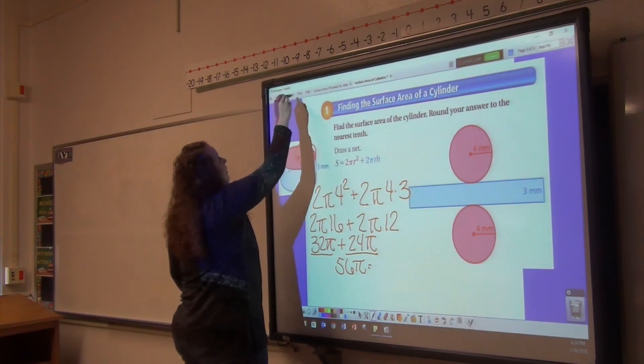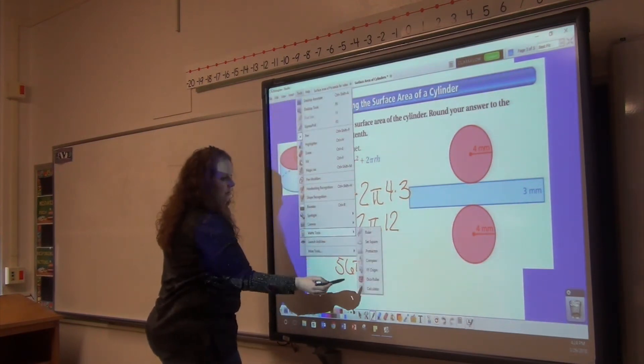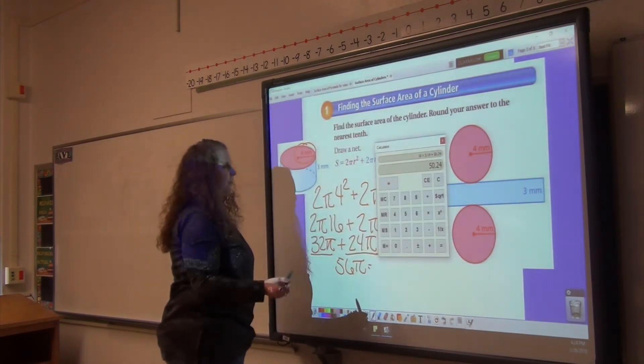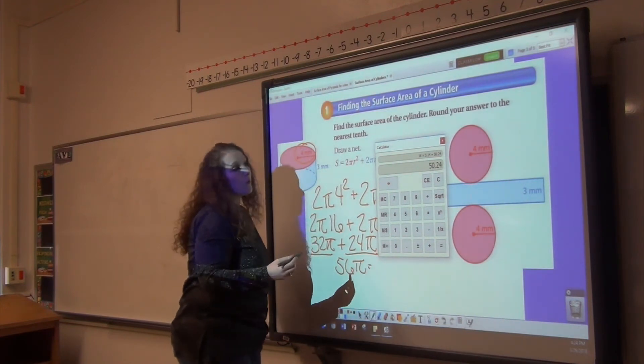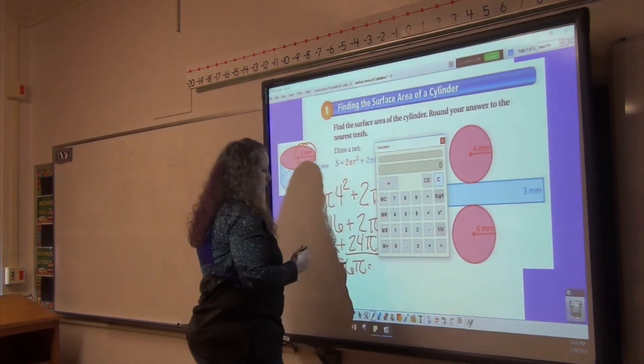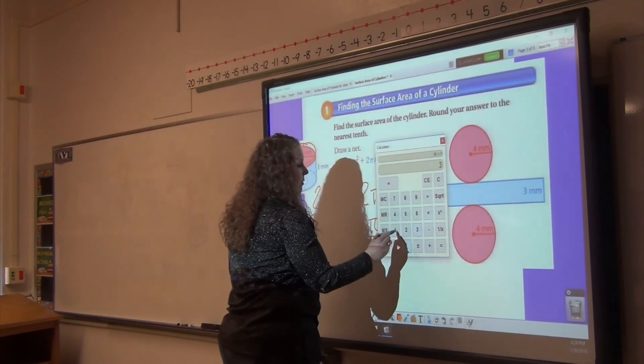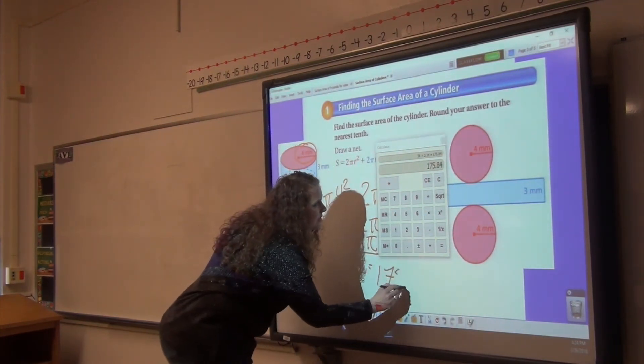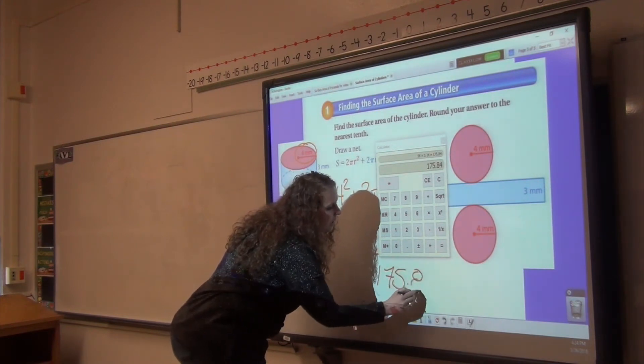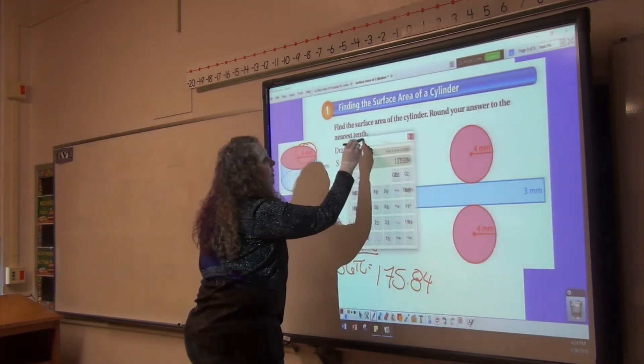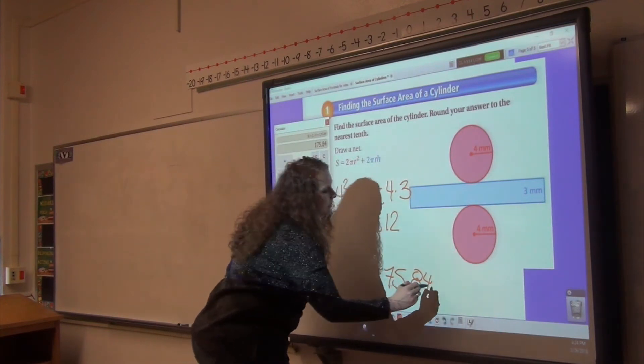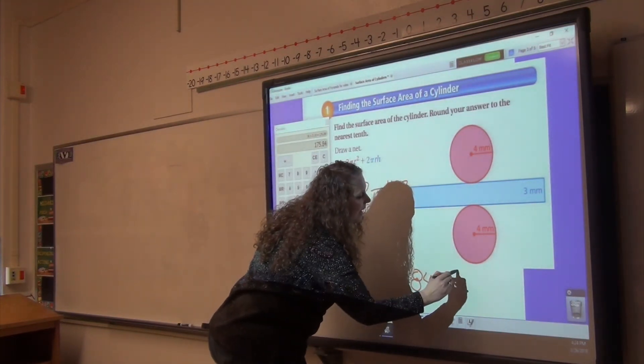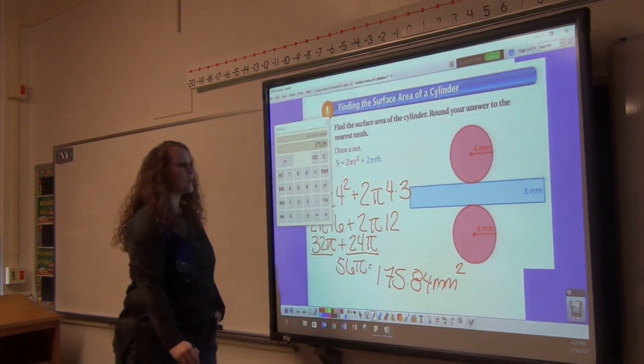and then we can use our calculator to solve what 56π is. We're going to use 3.14 for π. So 56 times 3.14 equals 175.84 millimeters, and it is an area, so it is squared.